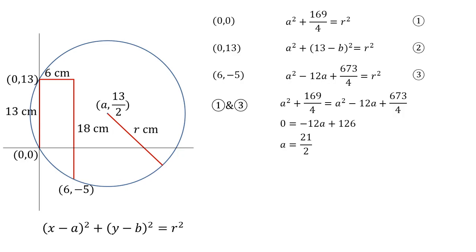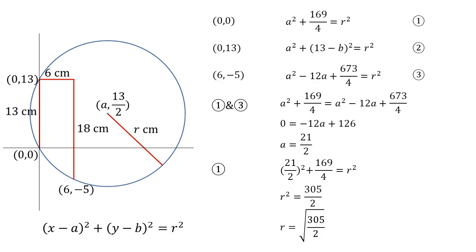Now we've got a, we can put this back into any of our equations to work out r². I'm going to use equation 1 as it's the easiest, so (21/2)² + 169/4 = r², giving r² = 305/2. Therefore r = √(305/2), which as a decimal is approximately 12.35 centimetres. So there we have it — that's the radius of our circle.